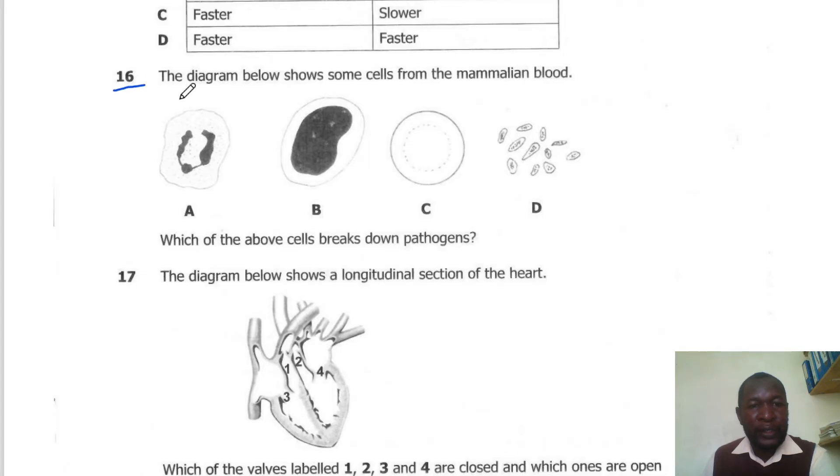Question 16. The diagram below shows some cells of mammalian blood. Which of the cells breaks down pathogens? Pathogens are broken down by phagocytes and phagocytes have a lobed nucleus. So the cell here with a lobed nucleus is A. This is the correct answer.